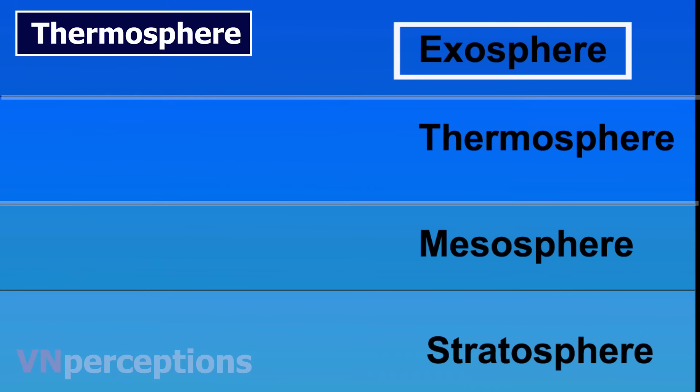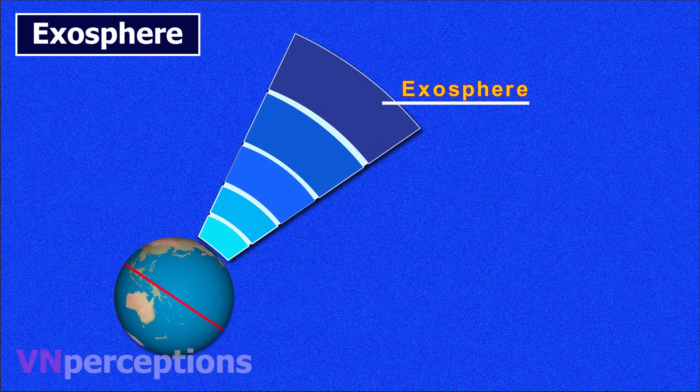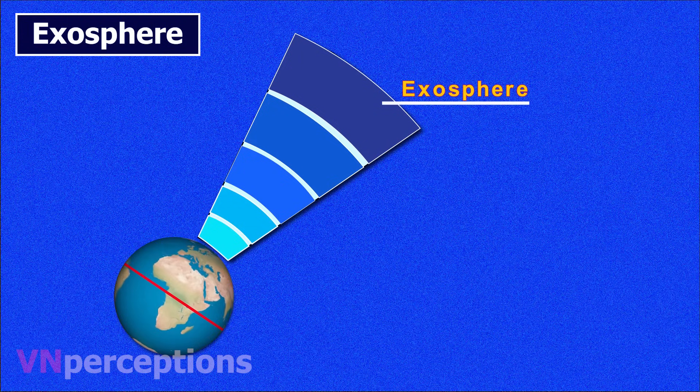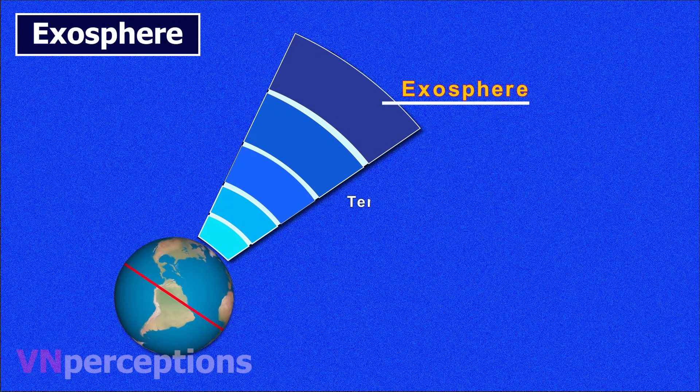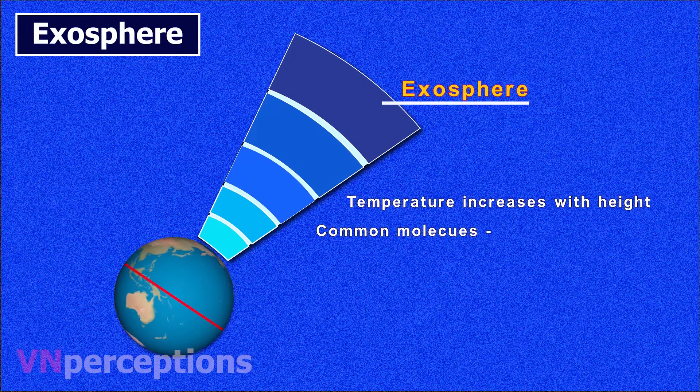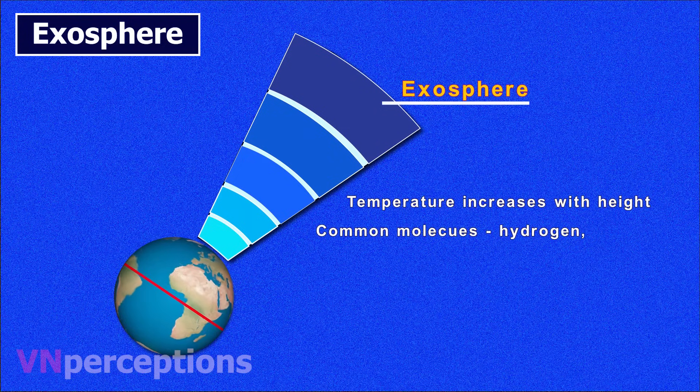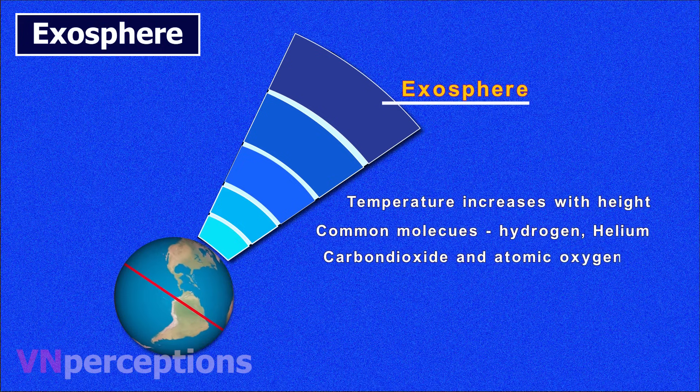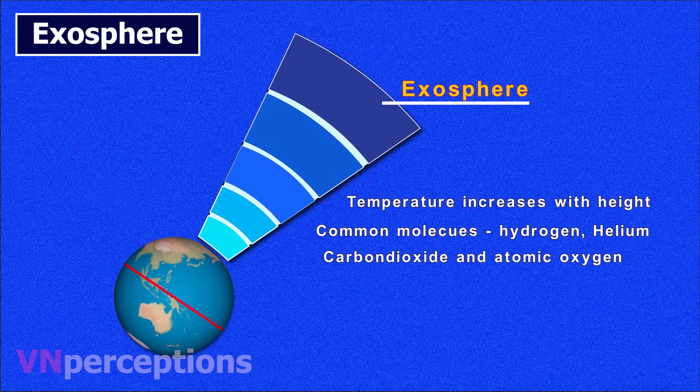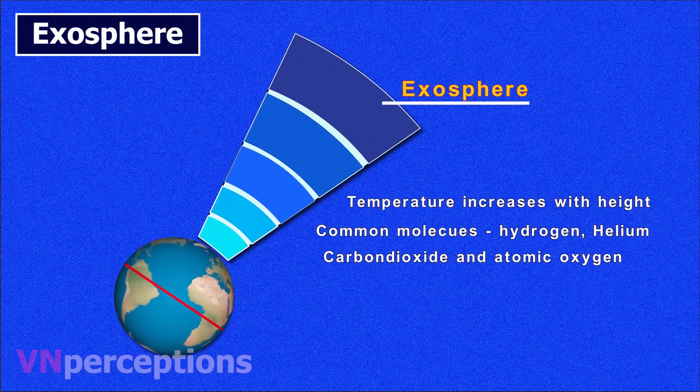Then comes the exosphere. The exosphere is the uppermost layer where the atmosphere thins out and merges with interplanetary space. It lies between 500 to 10,000 kilometers above the earth. In this layer, temperature increases with height. The most common molecules within earth's exosphere are those of the lightest atmospheric gases. Hydrogen is present throughout the exosphere with some helium, carbon dioxide and atomic oxygen near its base. Because it can be hard to define the boundary between the exosphere and outer space, the exosphere may be considered a part of interplanetary or outer space. It is located directly above the thermosphere. Very little is known about it due to lack of research.